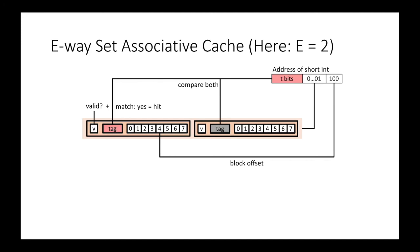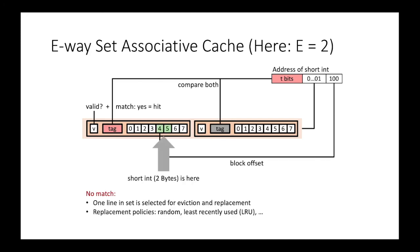Assuming the data being requested is a short integer of 2 bytes, we read the 2 bytes from the location that the block offset bits point to. In this case, the block offset is 100 in binary, which is 4 in decimal. In the case of a cache miss, the cache line is evicted and replaced with the new line from the lower-level memory hierarchy.